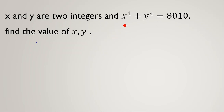Let's jump into the solution. It says x to the 4 plus y to the 4 equals 8010. Now I want to analyze the fourth power. Before that, let me analyze the square — what it means. So suppose we focus on x: x is even or odd, so we consider two cases.